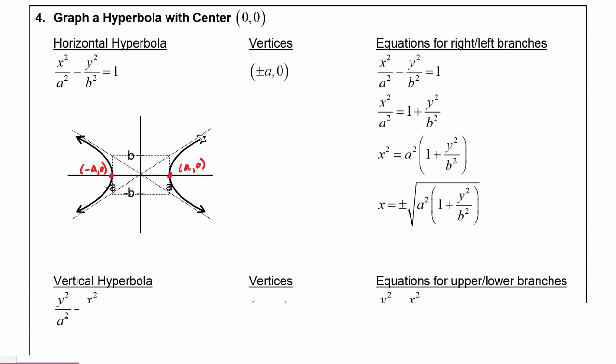A hyperbola has two asymptotes, as you can see in the picture. We use a and b in order to get those asymptotes. We make a box going through negative a, negative b, a, and b, and then the asymptotes of the hyperbola are the diagonals of that box.